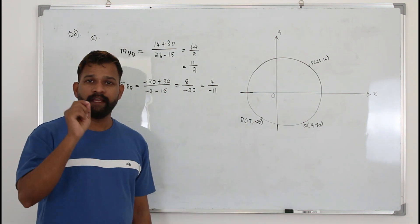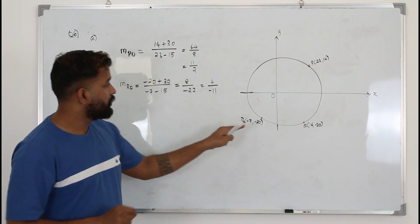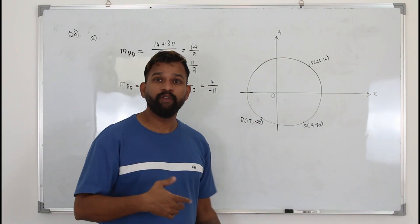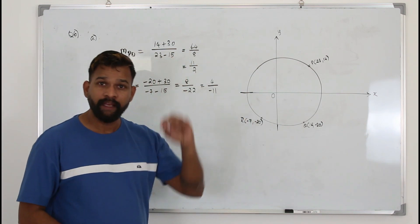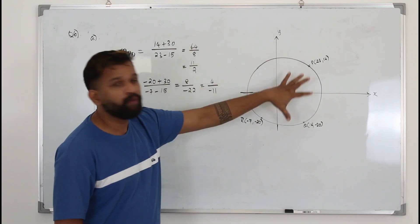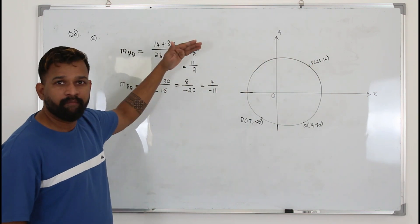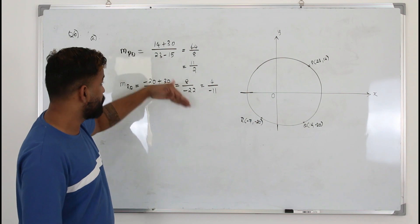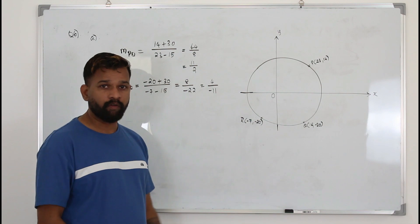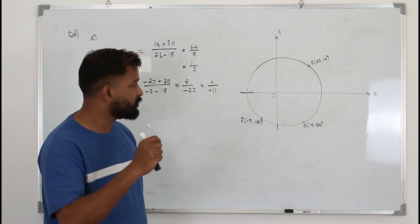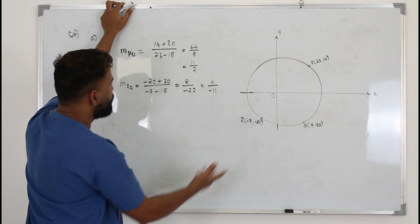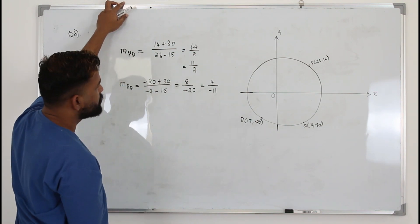An important exam point: the question says 'show that' it is a right angle at Q — it does not ask you to verify. That means it's definitely a right angle triangle and you must prove it. You cannot say the slopes are not negative reciprocals and conclude it's not 90 degrees — that's wrong. Since the question says 'show that,' it has to be 90 degrees, so if you multiply and don't get −1, you've made a mistake somewhere.